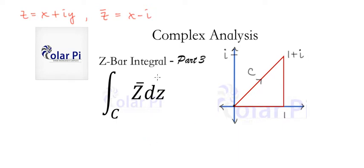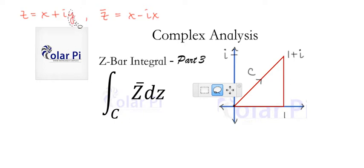So we can write z bar equals x minus ix, and in fact, the z along this diagonal is x plus ix, since, again, y equals x.